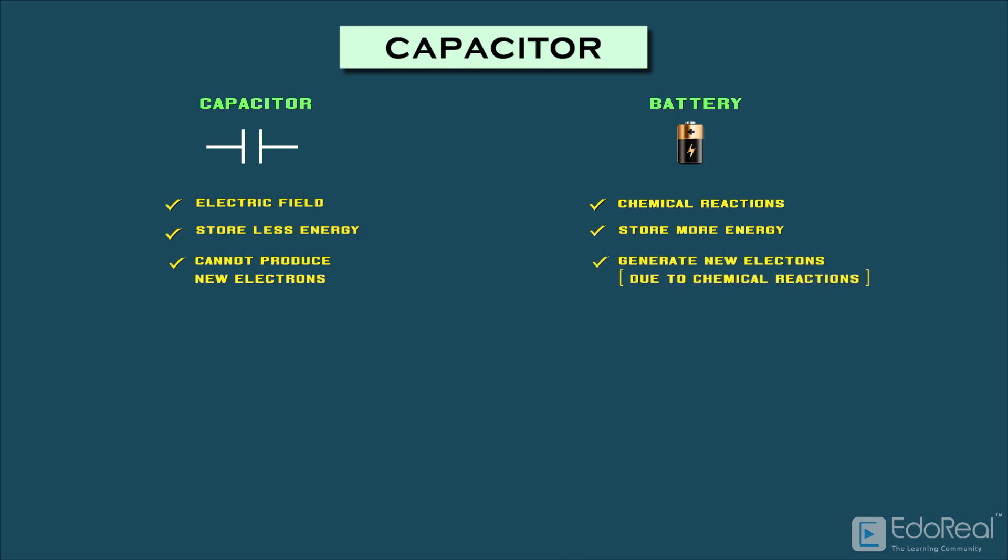Whereas, due to chemical reactions, a battery can generate electric charge on one terminal and absorb charge on other terminal.